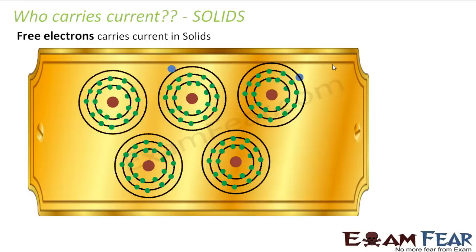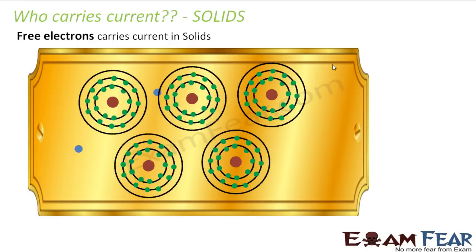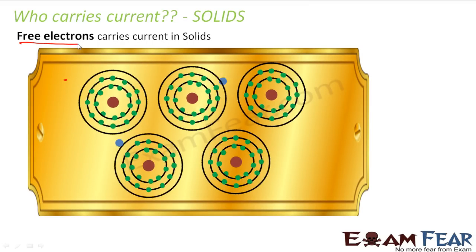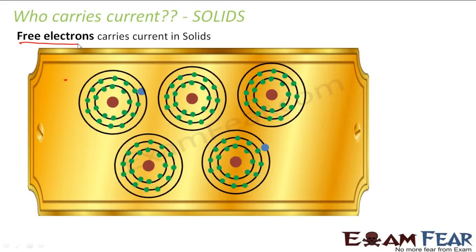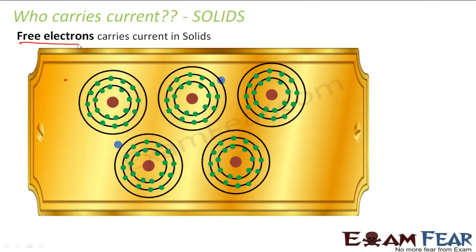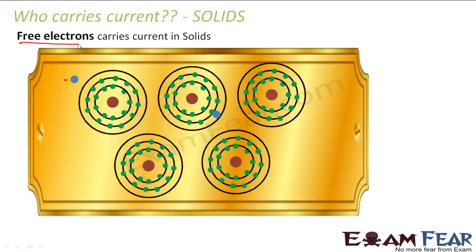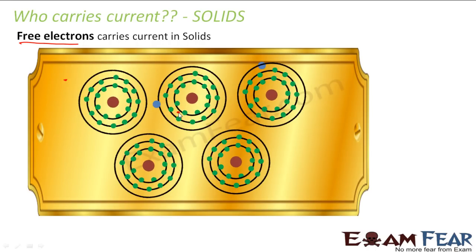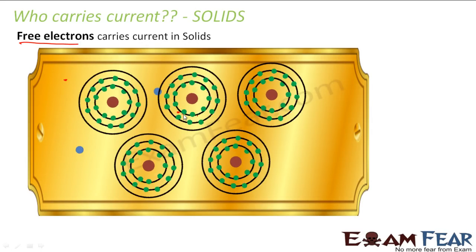When I talk of solids, it is the free electrons which carry current in solids. So what are free electrons? I can also call them electrons, but why am I calling them free electrons? These electrons are called free electrons because they are free to move around here and there. But from where do these electrons originate?